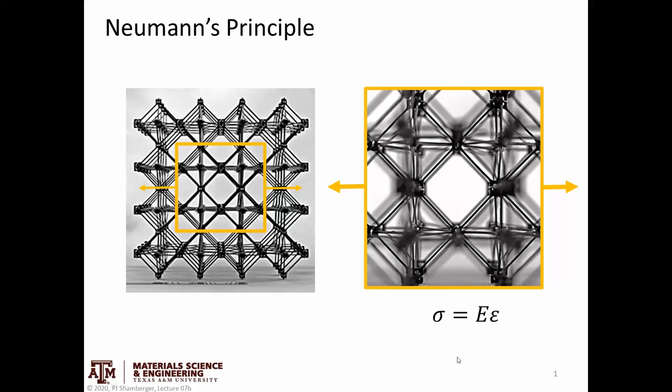Howdy. Today we're going to talk about Neumann's Principle, and this is basically a rule that relates the symmetry of a structure, for example a crystal structure, to the symmetry of the properties of that material.